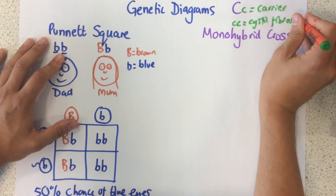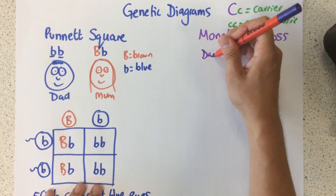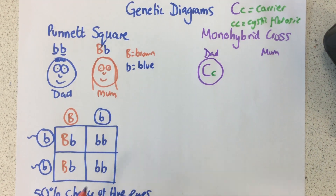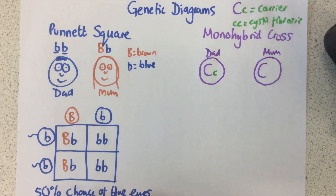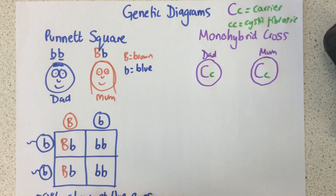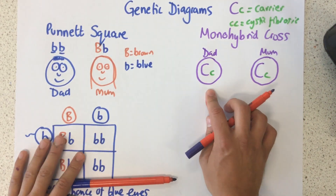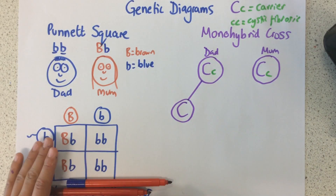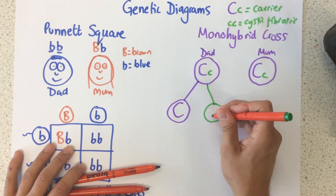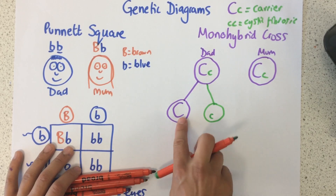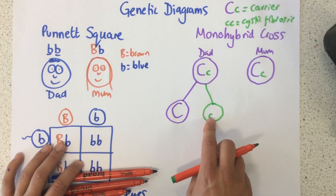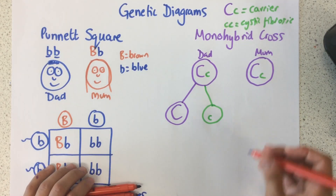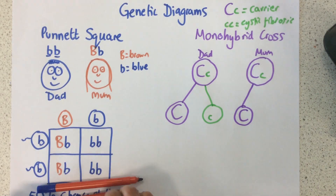Let's imagine we have two parents, dad and mum, who are both carriers. So neither of them have cystic fibrosis, but both of them have that recessive allele that could be passed on to the next generation. The first thing you need to do is show the different gametes produced. So 50% of dad's gametes are going to have the capital C, and 50% are going to have the lowercase c. Make it really clear which one's capital and which one's lowercase — make sure they're clearly different sizes. Same with mum: her two different gametes would be capital C and lowercase c.